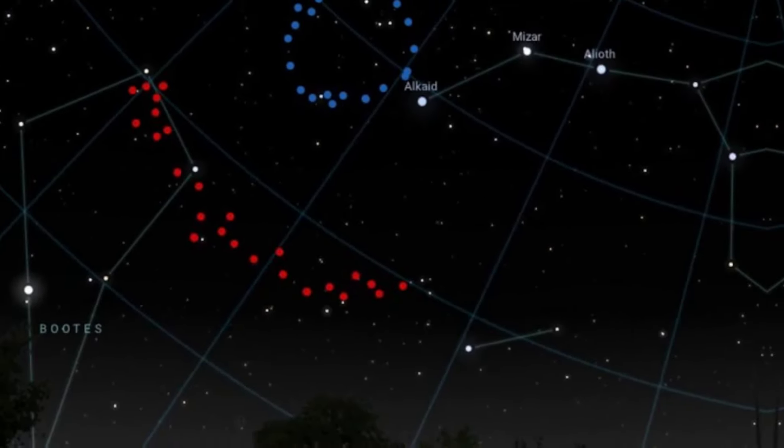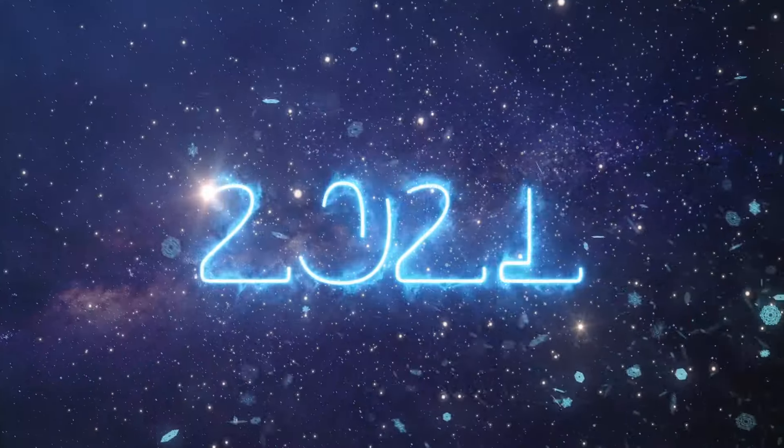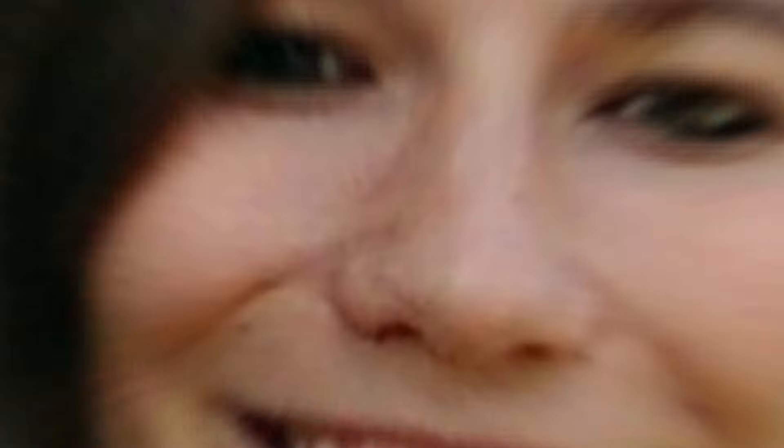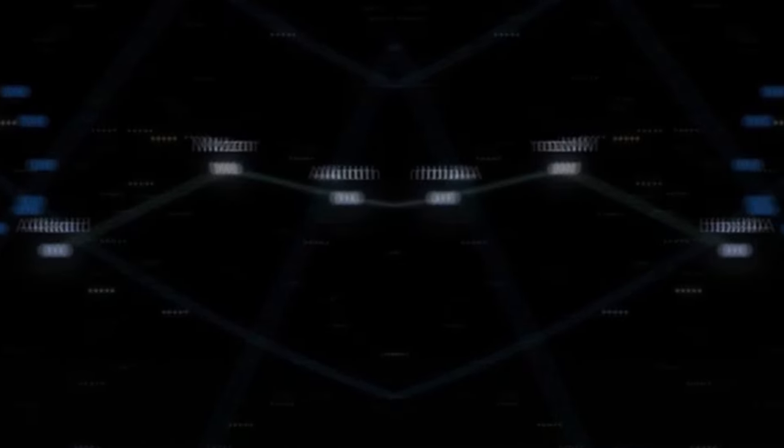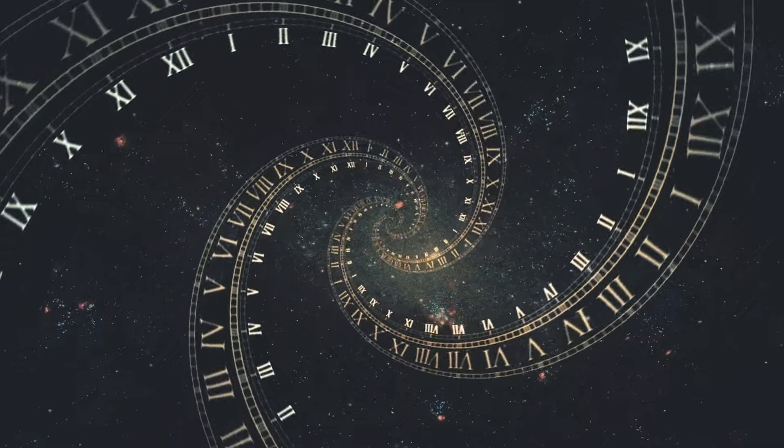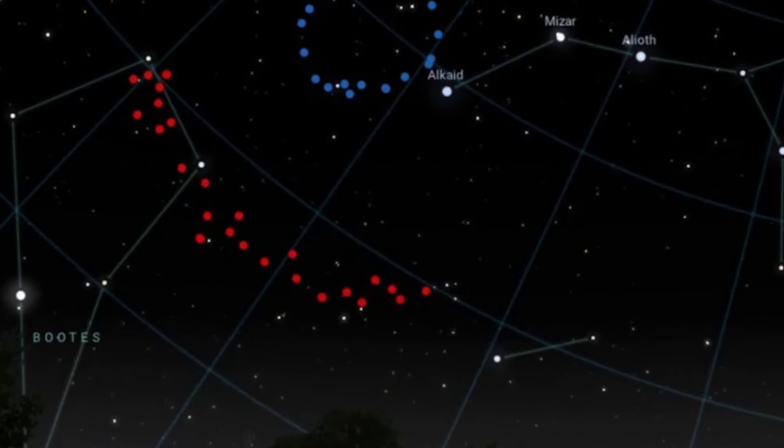The Big Ring isn't alone in pushing boundaries. Enter its cosmic buddy, discovered in 2021, the giant arc in the sky, also found by Alexia Lopez. Some say the giant arc might even outsize the Big Ring, stretching a whopping 3.3 billion light-years. But here's the twist. It doesn't form a complete circle like its newfound friend.